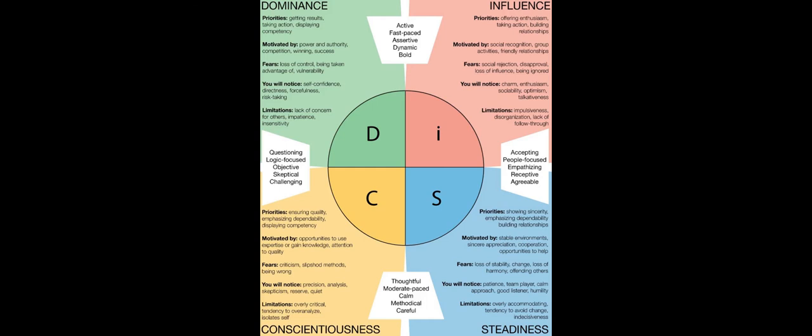C is for conscientiousness. These people are characterized as analytical, reserved, precise, private, and systematic. And when we think of this, we think Hermione Granger — knows the rules and always wants to follow the rules. 'Now, if you two don't mind, I'm going to bed before either of you come up with another clever idea to get us killed. Or worse, expelled.' 'Actually, I'm highly logical, which allows me to look past extraneous detail.'